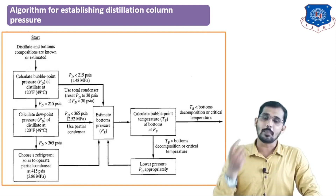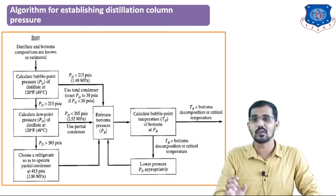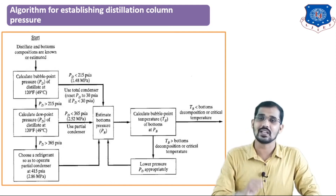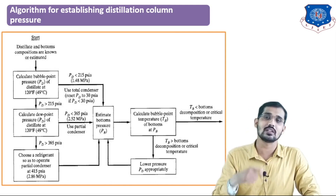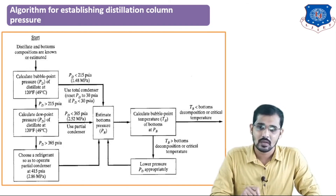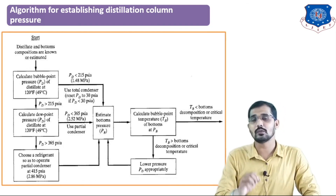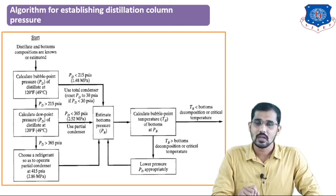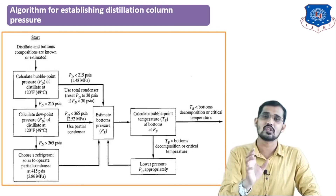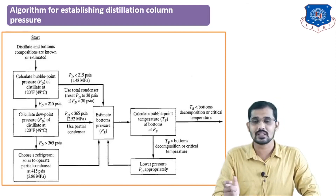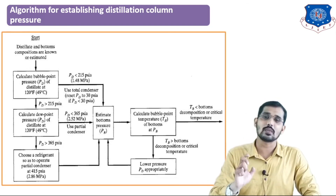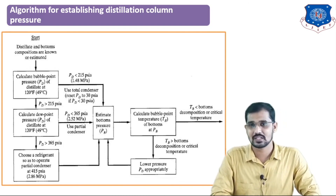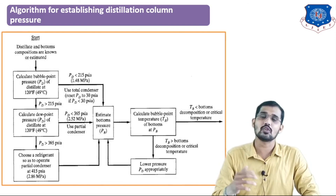In this manner, we can operate the distillation column. This is the algorithm for establishing distillation column pressure and selection of partial or total condenser, depending on operating conditions — temperature and pressure. In this lecture, I explained different types of condensers — air cooled, water cooled, and evaporative — and the algorithm to establish distillation column pressure, which can be asked for 5 to 7 marks in your exam. The condenser types question can be asked for 3 marks. We will see the next topic in the next lecture.